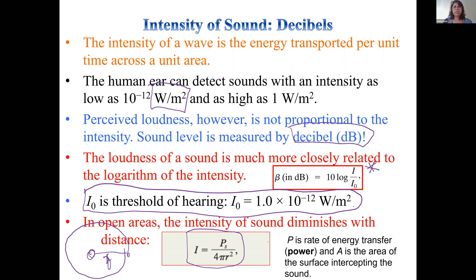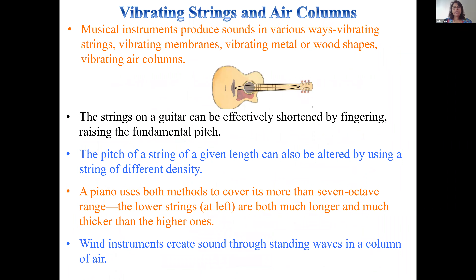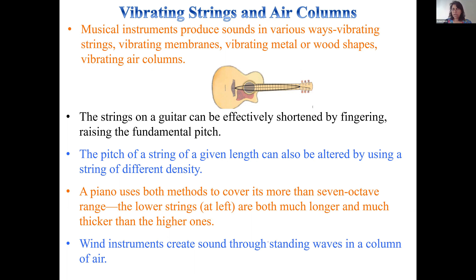Vibrating strings and air columns produce sound in musical instruments. In guitars, cellos, and violins, strings of different thickness vibrate; changing finger position changes the harmonic. In pianos, strings of different lengths and thicknesses produce different notes across octave modes. Wind instruments produce harmonics by opening and closing holes to change the vibrating air column length.